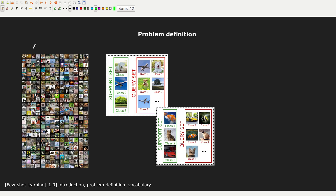Let's try to give a more formal definition. Generally, we still have a large dataset of images and classes, and then we have different tasks. Each task is made up of a support set and a query set. In the support set, we have three different classes with just one example per class — one dog, one plane, one tree. The query set is a sort of validation set, sometimes called a target set. The idea is that from this small amount of data, you have to perform well on this larger set of unlabeled data, associating each image to its correct class.